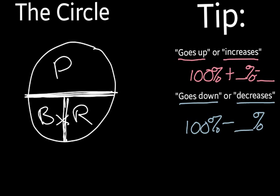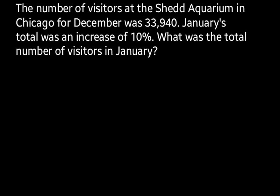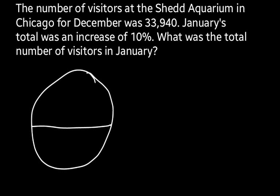So let's take a look at this in action. The number of visitors at Shedd Aquarium in Chicago for December was 33,940. January's total was an increase of 10%. What was the total number of visitors in January? If we draw our PBR circle, we have a portion on top, base on the bottom left, and rate in the bottom right.